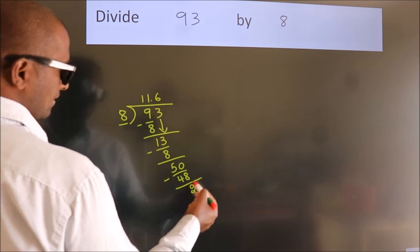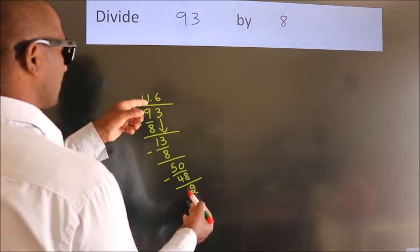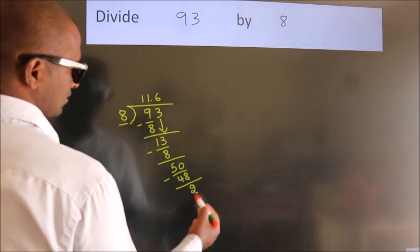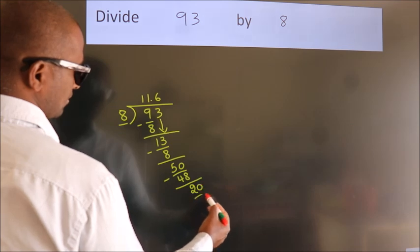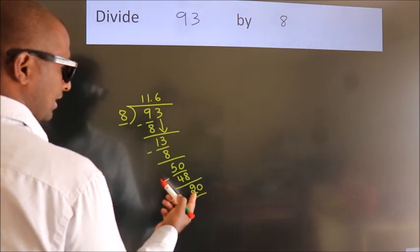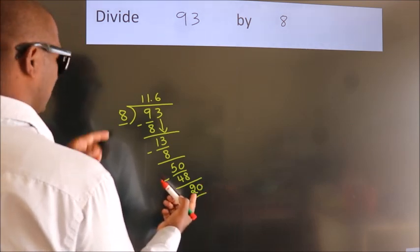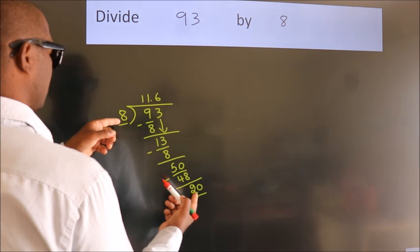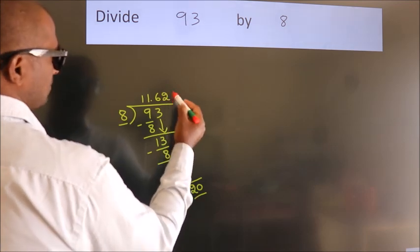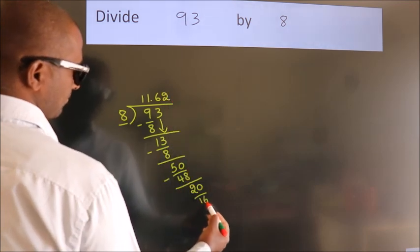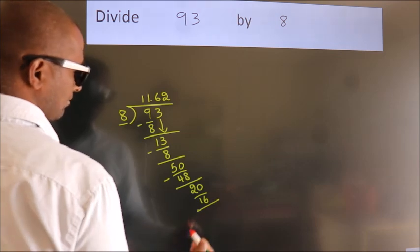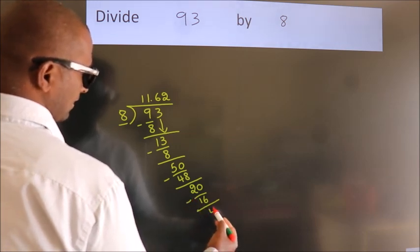After this, we already have the decimal. So, directly take 0. So, 20. A number close to 20 in 8 table is 8 times 2, 16. Now, we subtract. We get 4.